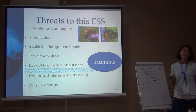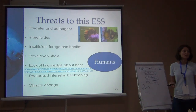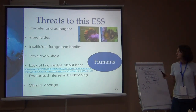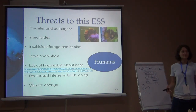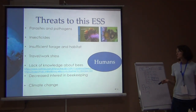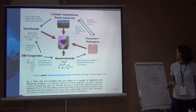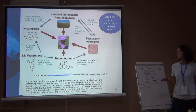There's a loss of forage — what they feed on — and a loss of habitat — where they nest. Through land use and land cover changes, we've modified those things, and bees have fewer places to nest and eat. For honey bees, there's a lot of travel stress in the U.S. — they're carted across the entire country and back. There's also a lack of knowledge about bees and decreased interest in beekeeping. Climate change is also affecting the ranges of wild bees. It's the quintessential complex system.